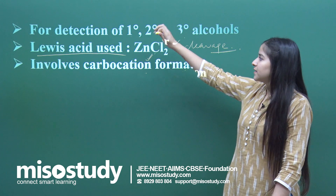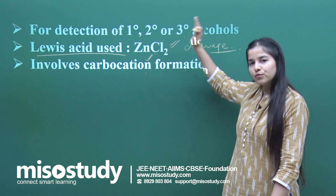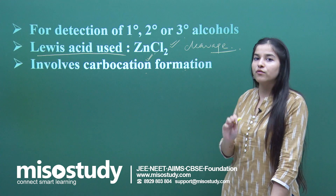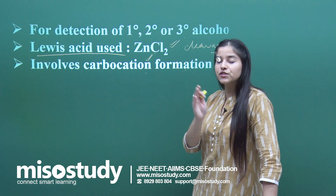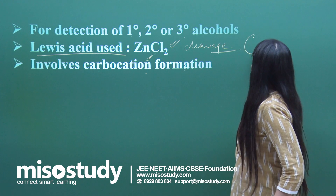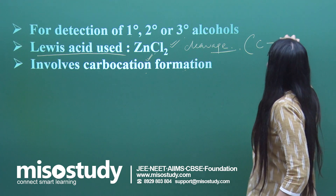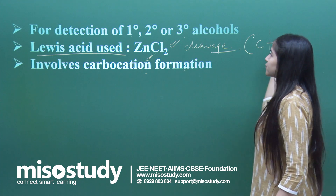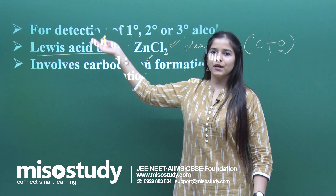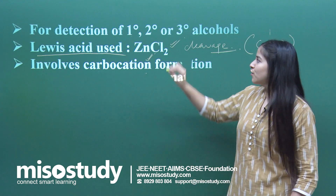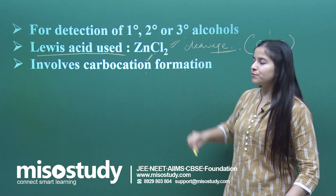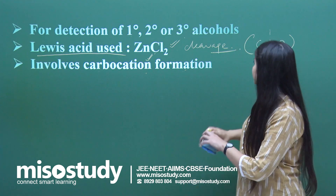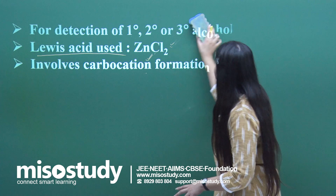The Lewis acid is helpful in the cleavage of the oxygen and carbon bond — the C-O bond. This oxygen comes from the alcohols. So basically we deal with this reaction for the detection of primary, secondary, or tertiary alcohol. Let's discuss the reaction now.